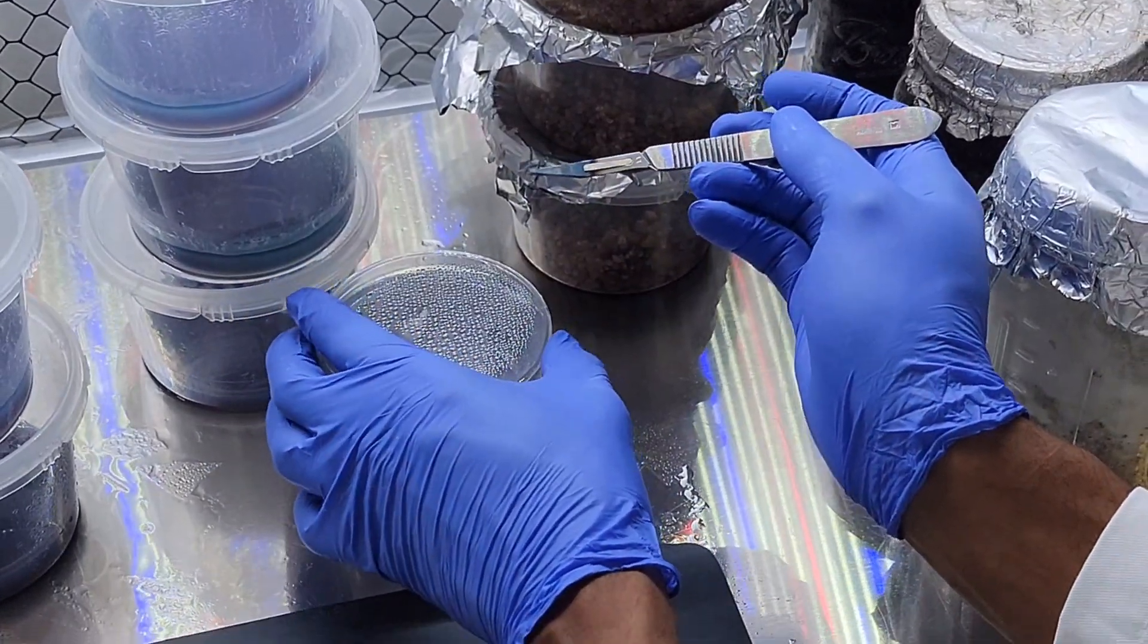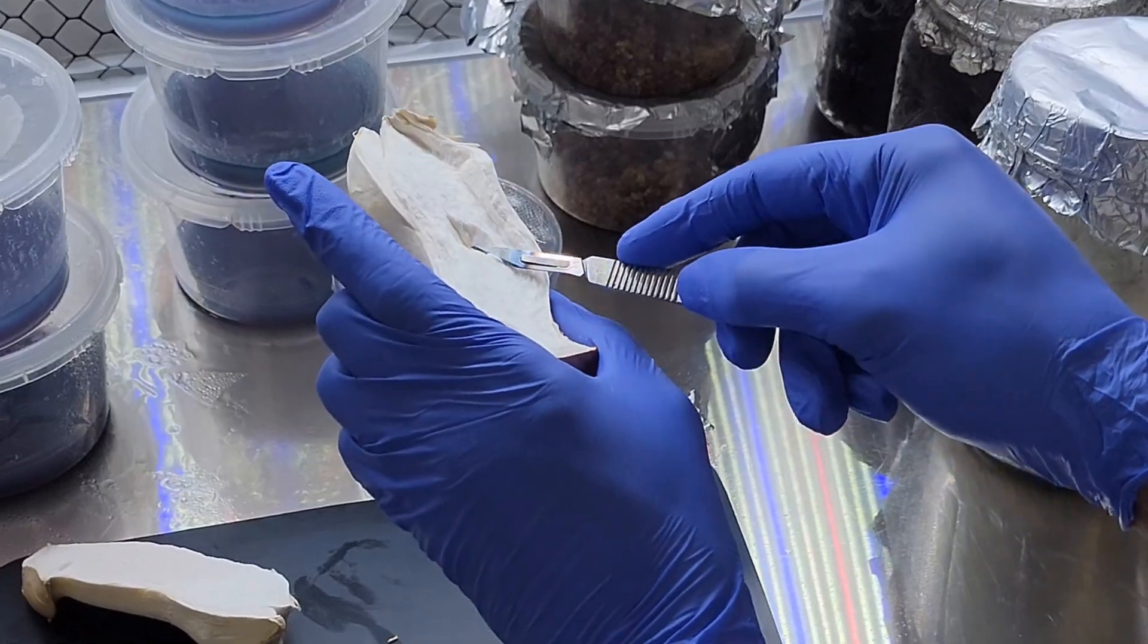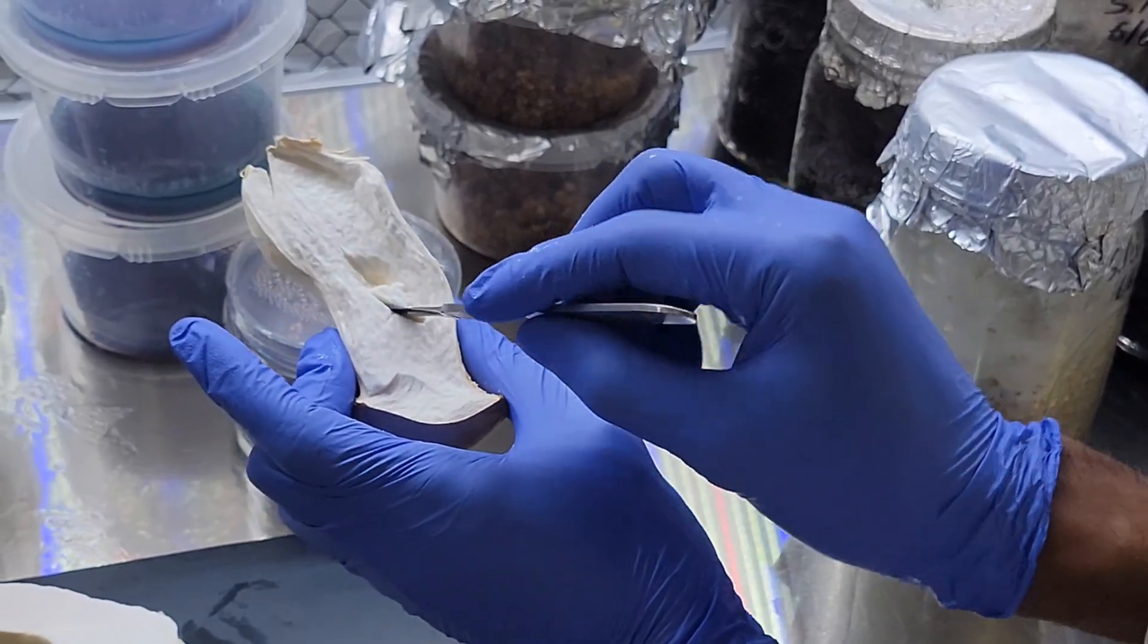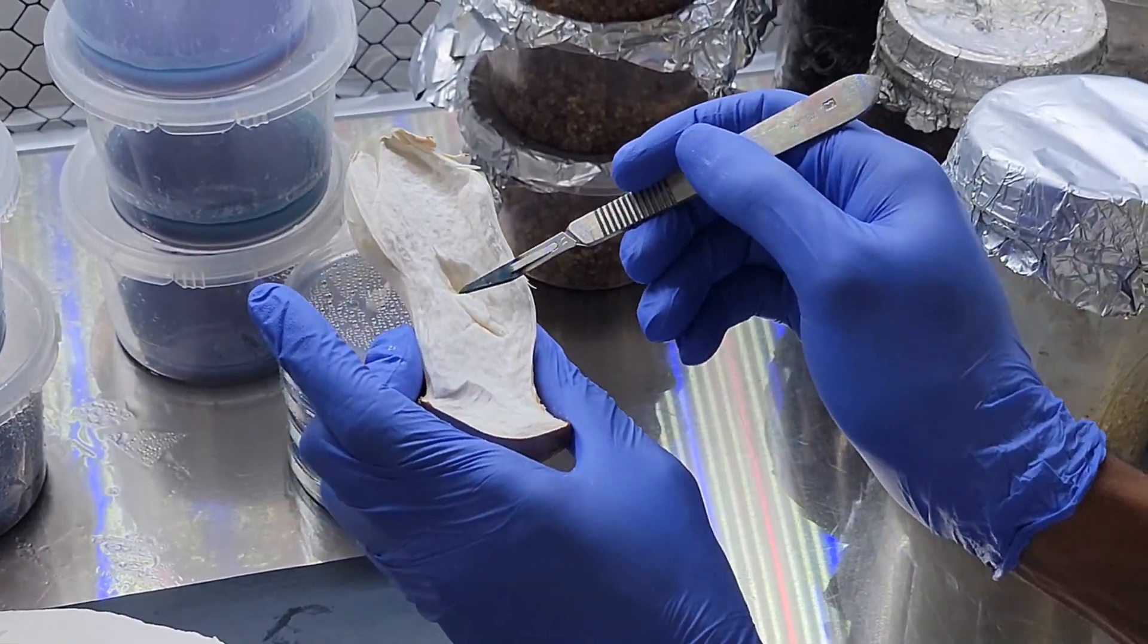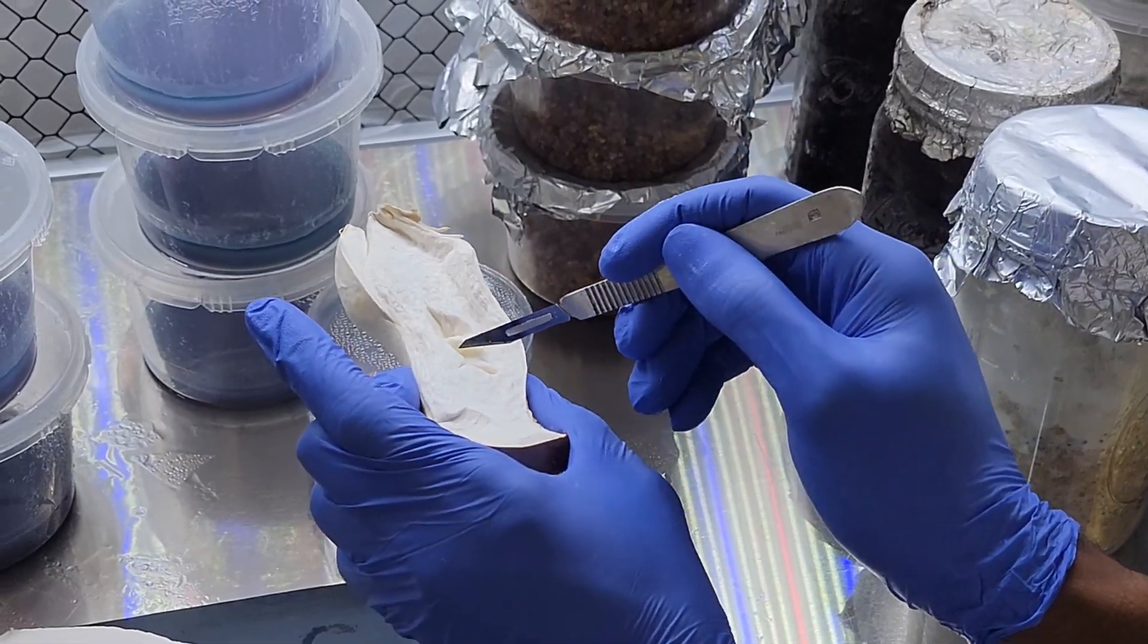This will not always be the case for fungi such as Trametes versicolor, also known as turkey tail - it's very thin. So sometimes you might have to put the whole specimen onto agar, which is totally fine. You'll just have to isolate the contamination away through multiple transfers.